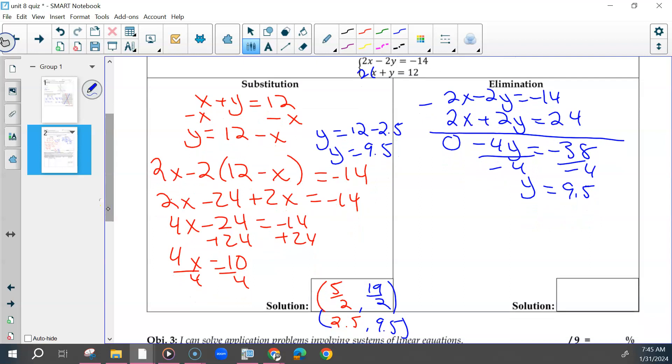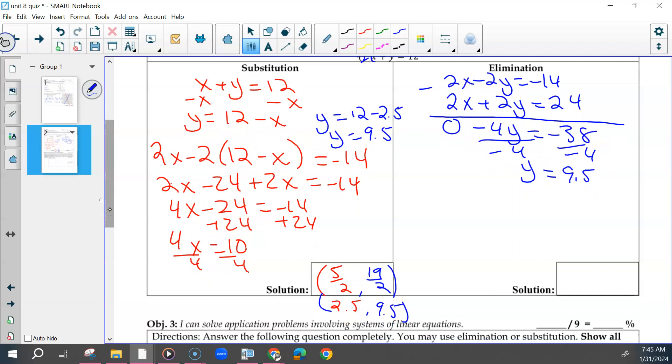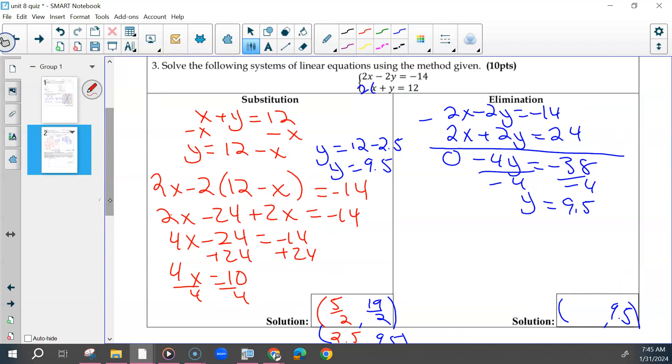So again, we get that 9.5. These two solutions should have been the same because this is the same problem. You shouldn't get two different answers for the same problem. And then you could have taken that. Some of you re-solved this whole thing by elimination. You didn't need to do that. You could have just put 9.5 back into one of your equations. x plus 9.5 equals 12, I could solve for x here.